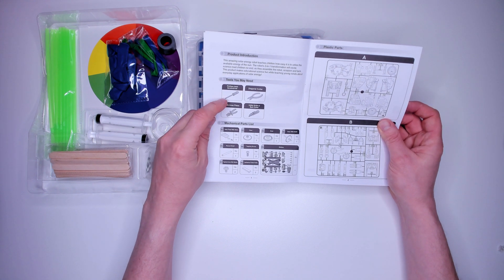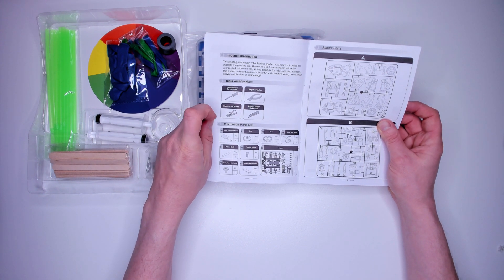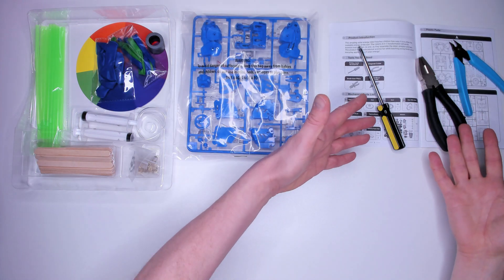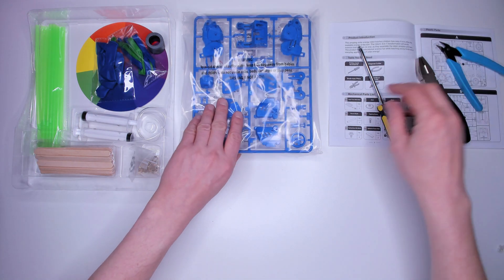Okay, it says we need some tools. I'll get the snips, pliers, and phillips screwdriver now. Cool, now let's open up this pack which has the robot parts in it.